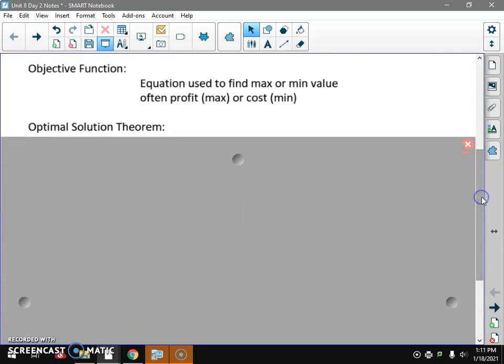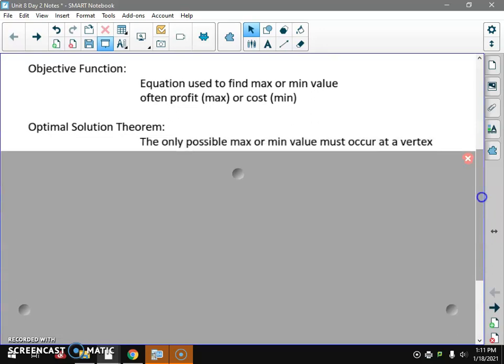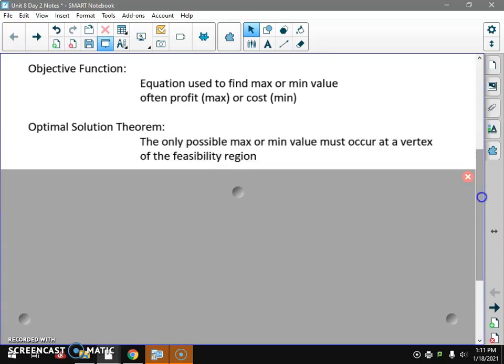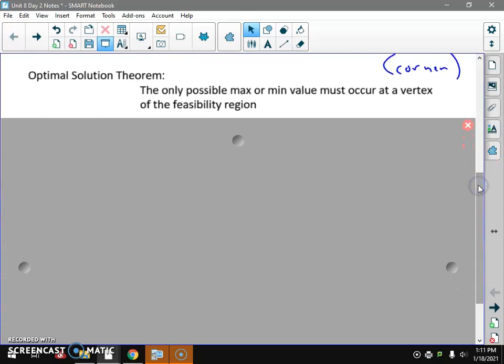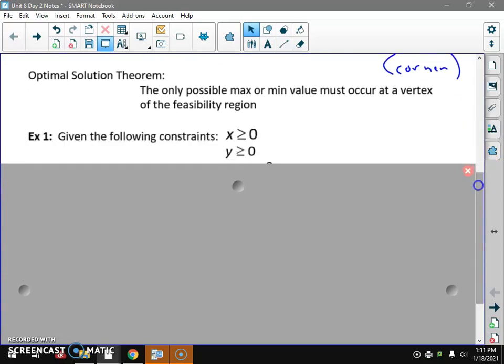Objective function is the thing we're looking to maximize or minimize. Again, often profit gets maximized, cost gets minimized. The optimal solution theorem, also known as the optimization theorem: the only possible max or min value of a feasibility region must occur at a vertex or corner of that feasibility region. We don't need to test every point inside the region, we just have to test the corners.